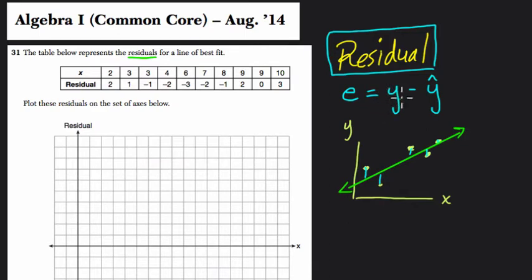So that means that the residual, E, is specifically the observed value. Y is the observed value, so this would be y here, this point. That's what actually happened, minus the predicted value, which is the point on the line of best fit itself.